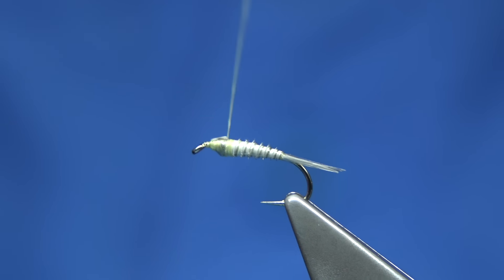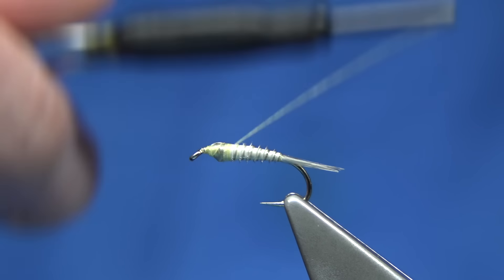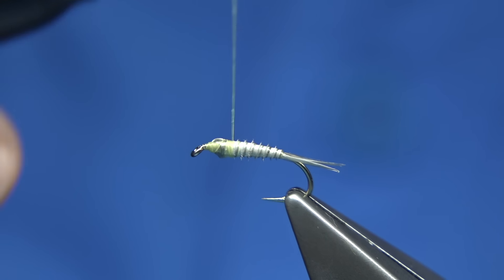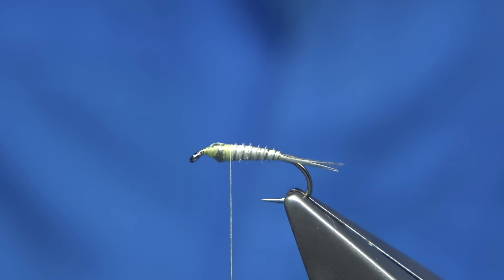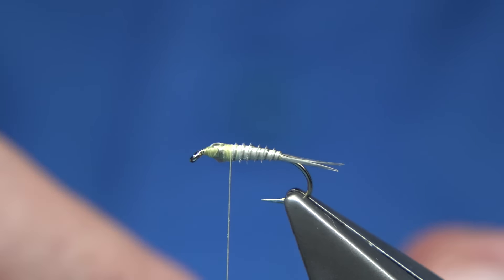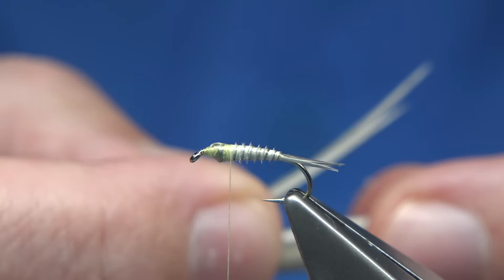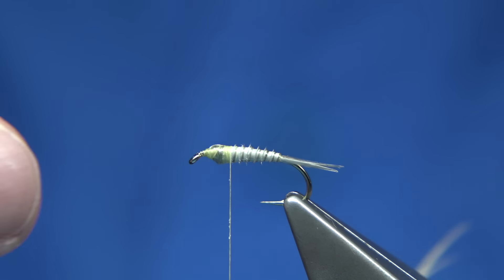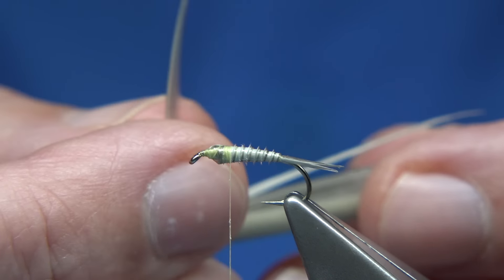Put some wax on my thread here to give me an extra grip. Now you want to be beside your body here, going to tie in again. We're going to go back to the turkey biot because I'm going to use the whole thing to tie the fly, frankly, except for the only two things that's different is the dubbing for the thorax and the thread.